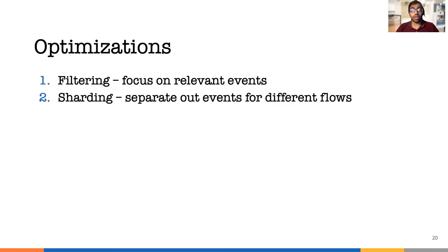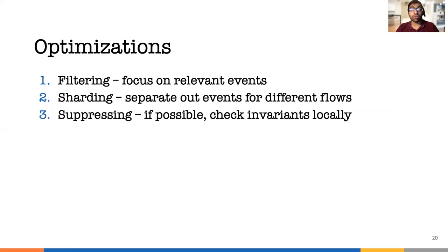We can increase the number of servers without sacrificing performance. Third, if an event is not going to change the state in the final automata, we suppress that event. These optimizations take advantage of properties specific to or common in network functions. I'm going to go into detail on how an operator can specify a filter, how to shard, and how we suppress events.